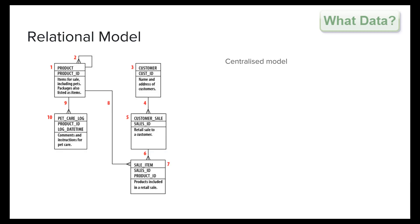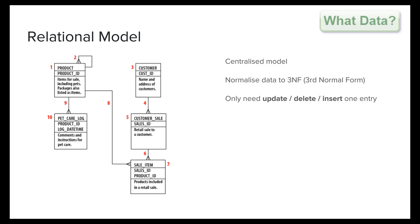Dr. Codd noted that by using a centralized relational model, this would address a large number of the issues. By normalizing data and having the tables relate to each other, anomalies could be greatly reduced, where only a single row of data needed to be updated in any given table, and within each table a unique key would be used to identify the given row of data. In addition, using a relational model also cuts down on the amount of data that needs to be recorded, often referred to as data redundancy.